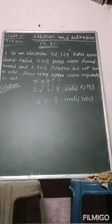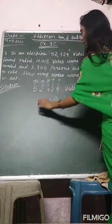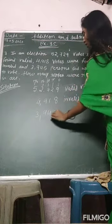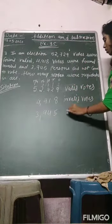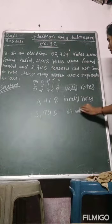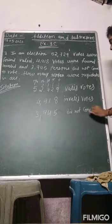Now next, persons who did not come to vote. This is 3,945.